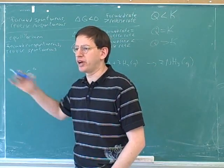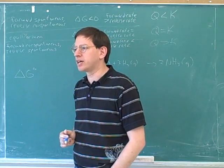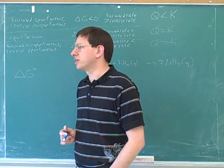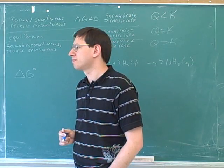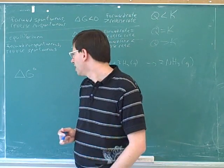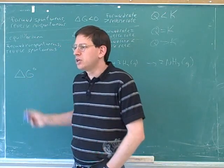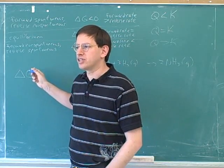For gases, standard condition is based on the pressure, partial pressure. And for aqueous species, standard conditions is based on the concentration. So this tells us what the delta G would be at standard conditions.